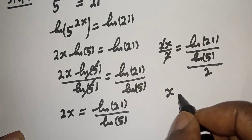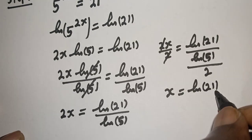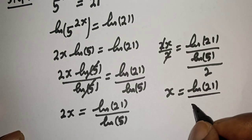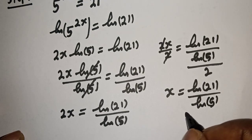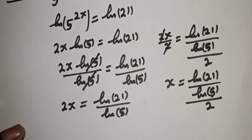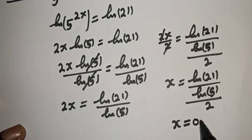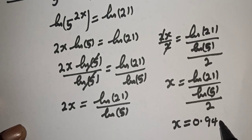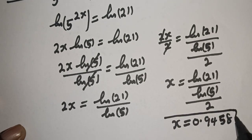If you press your calculator, the value of x is equal to natural log of 21 divided by natural log of 5, divided by 2, which equals 0.9458. This is the second method.